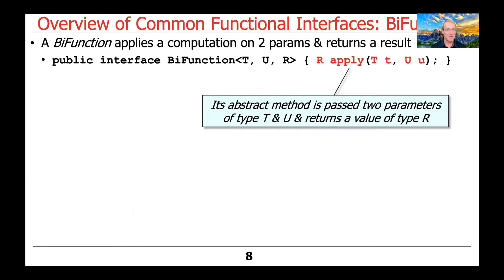The first parameter, T, is the first parameter passed to apply. The second type parameter, U, is also passed as the second parameter to apply. T and U are distinct, so we can have different values or different types for each — they don't have to be the same type, though they often are. And finally, R will be the return value, or the result that comes back from the apply abstract method.